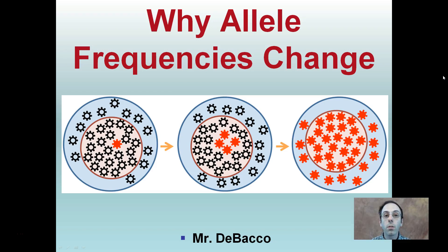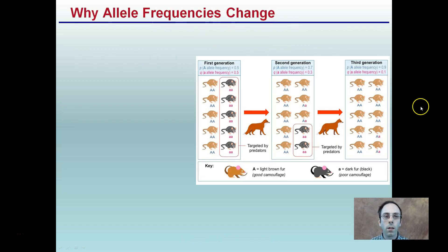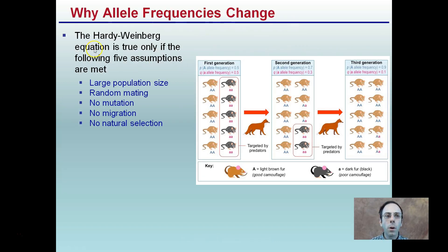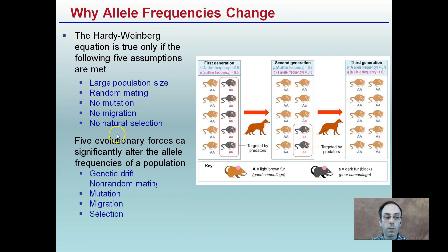Here we're going to answer the question of why allele frequencies change. Why, if we have one red individual that then goes to four and shifts basically the whole population to red individuals, why do the allele frequencies change over time? The Hardy-Weinberg equation is true only if the following five assumptions are met: large population size, random mating, no mutations, no migration, and no natural selection. This rarely occurs in a normal population.